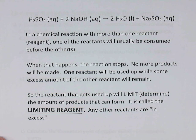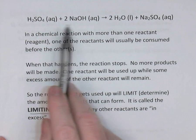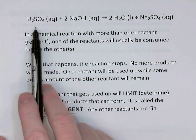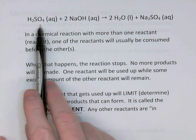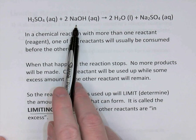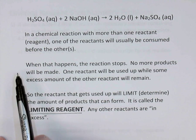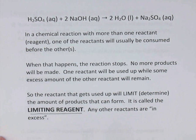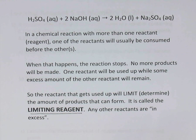It is theoretically possible that you could mix exactly the right amount of sulfuric acid and sodium hydroxide so that they both get used up. In that case, both would be considered limiting reagents and you could use either one of them to determine how much product you make.